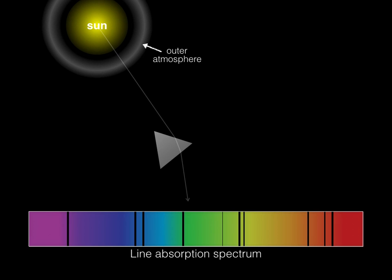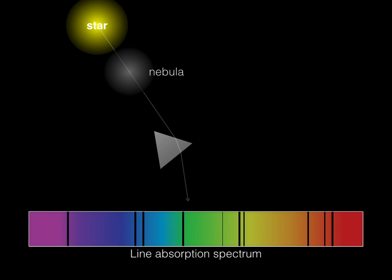By measuring the wavelengths at which the black lines occur, we can identify the elements present in the sun's outer atmosphere, as we can with any star. We'd also get a line absorption spectrum if we were observing a nebula with a star behind it.